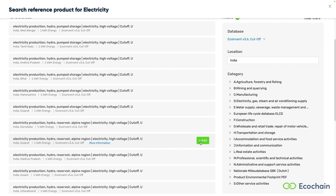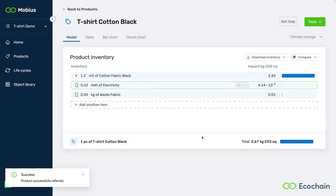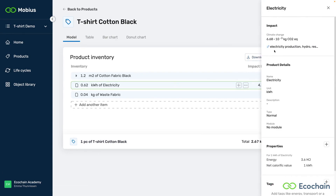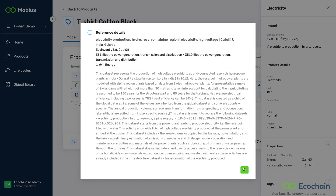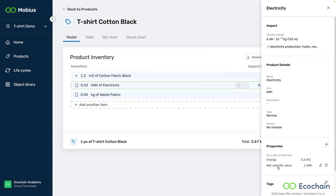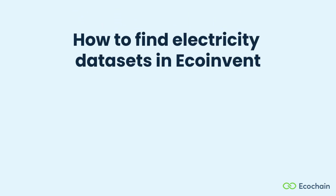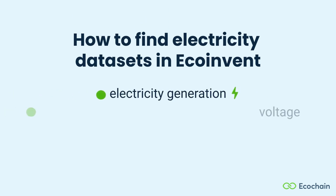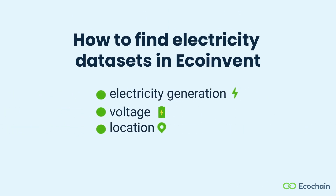If necessary, there are ways to include transmission and conversion to lower voltages. Again, we check the dataset unit with our model unit and check if the property fits these units. If you want to know more about properties, we have another video that explains this concept. In this video, I explained how to find electricity datasets in EcoInvent. By answering the three questions about electricity generation, voltage, and location, you can determine the most suitable environmental impact dataset for your needs. In case you have more questions about this topic, we have more resources available, and you can always reach out. Good luck doing your own LCA!